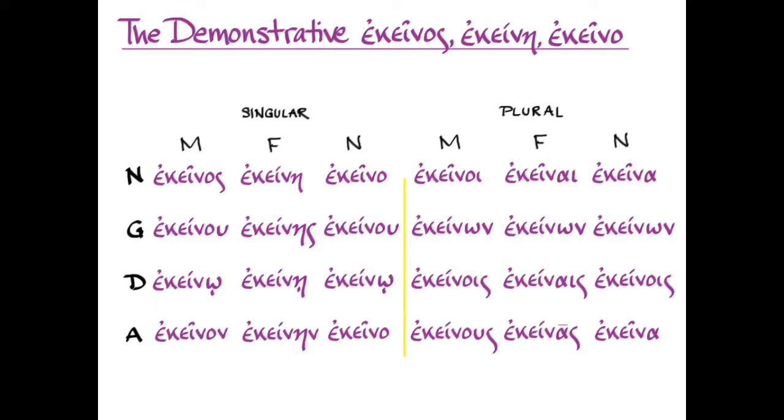So you can see that this is just like the -ος, -α, -ον adjectives that you've learned, καλός, καλή, καλόν, except in the neuter nominative and accusative singular, where that final nu is gone. And so the only irregular thing about the declension of ἐκεῖνος is in that particular spot, the neuter nominative singular and also the neuter accusative singular.